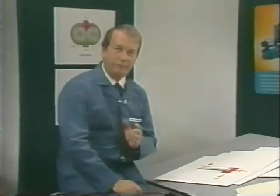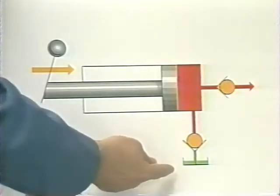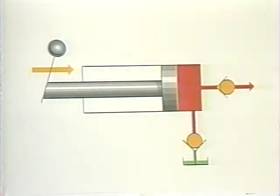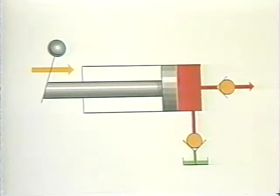Positive displacement pumps, on the other hand, deliver a definite quantity of fluid for every stroke, revolution, or cycle. This illustration shows that on the intake stroke, fluid enters the pump through a check valve. On the forward stroke, the check valve closes, sealing off the inlet. Therefore, the fluid displaced as the piston is moved forward must flow through the pump outlet.